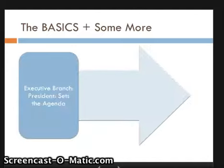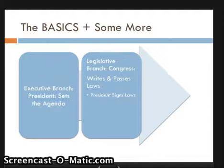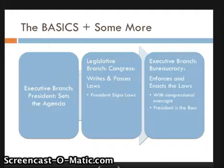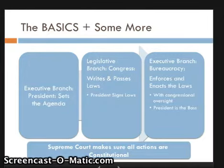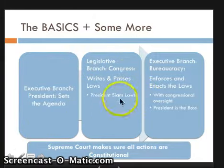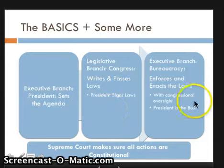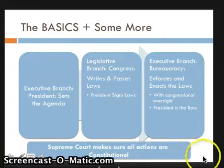As we've learned so far, we started with the presidency and the executive branch — the president sets the agenda. Tomorrow will be the State of the Union address, which is his constitutional requirement to set the agenda. The legislative branch, made up of Congress, the House, and the Senate, writes and passes the laws, which the president must sign. Once the president signs the laws, we get to the step we'll be focusing on in this unit: the bureaucracy. He, in turn, enforces and enacts the laws with congressional oversight, but the president is the boss. Throughout all of this, the Supreme Court ensures all government actions — from the agenda, to how Congress writes the laws, to enforcement — are constitutional and nothing violates the Constitution.